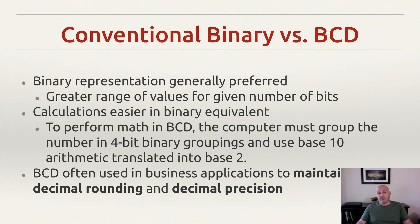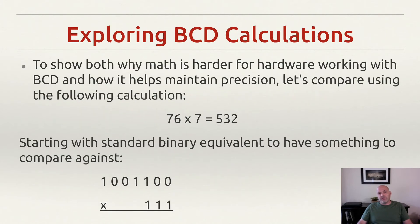At the end of the day, it's become a very specialized tool to fix a very specialized problem, and the reason why is because it takes a lot of overhead to actually do it — we're going to explore why in this next part. Let's start by looking at a multiplication problem. Let's say we have to multiply 76 by 7. In decimal we can do that quite easily, and we know the answer is 532.